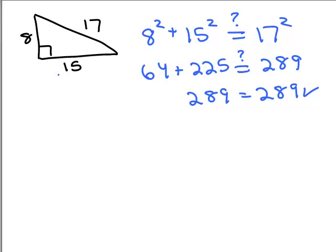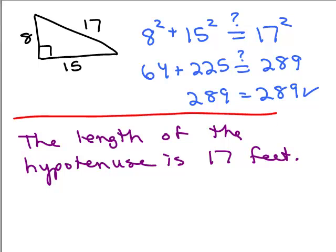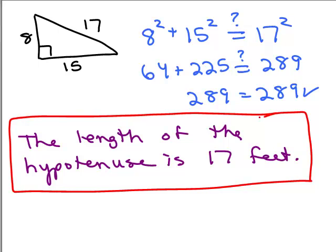The length of the hypotenuse is 17 feet. You should also go back to the original wording to verify: one leg is seven more than the shortest side — 15 is 7 more than 8, true. And the hypotenuse is one more than twice the shortest side — twice 8 is 16, plus 1 is 17. Everything checks out. The length of the hypotenuse is 17 feet.